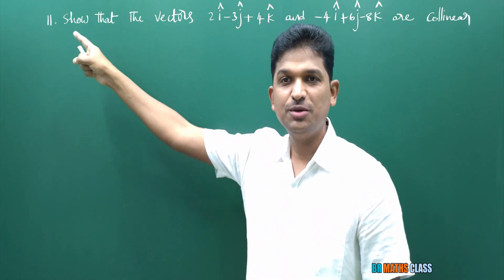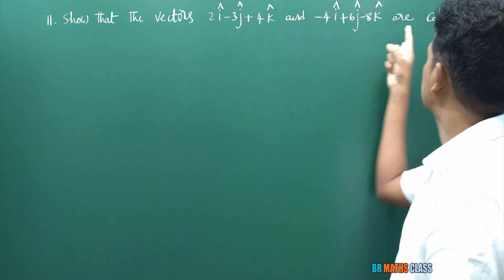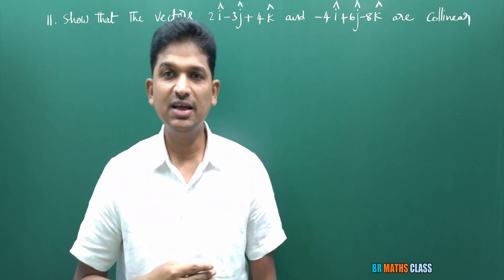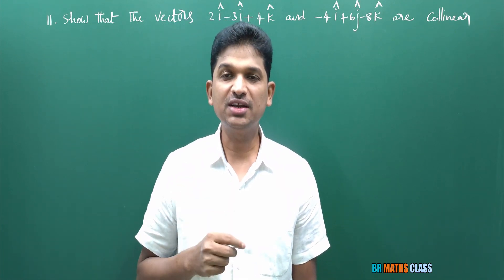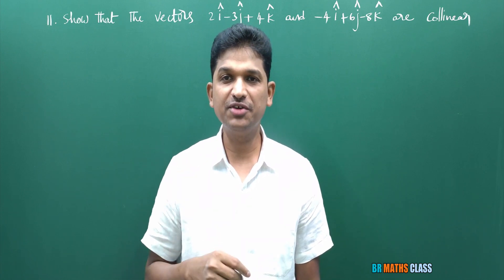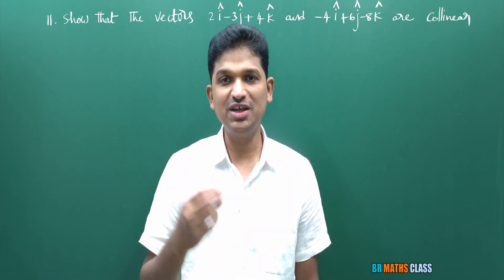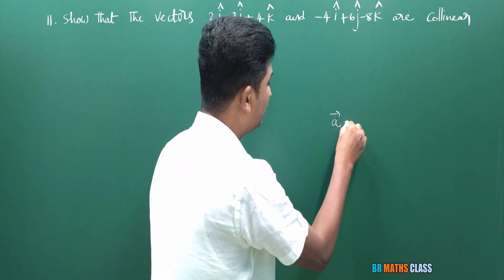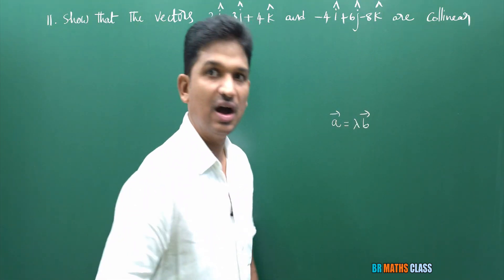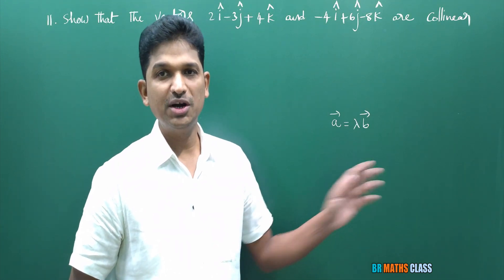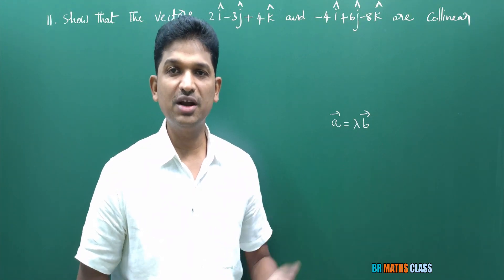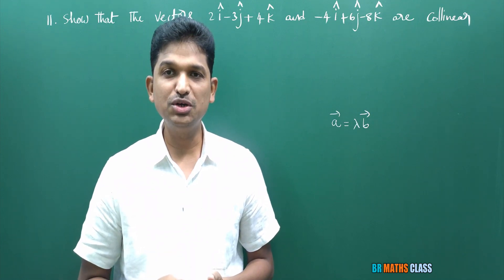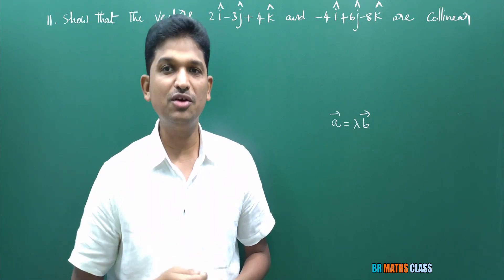Observe question number 11. What are they asking? Show that these two vectors are collinear. We need to show that these two vectors are collinear vectors. While learning the definition of collinear vectors, you learn this point: if one vector is expressed as a scalar multiple of another vector, then we say that those two vectors are collinear vectors. Collinear vectors are also known as parallel vectors.